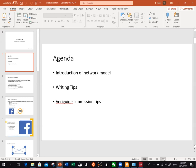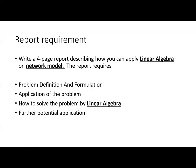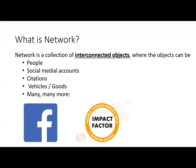So what is a network? A network is a collection of interconnected objects. For example, I've drawn four objects here: A, B, C, D. An object could be anything — people, academic papers, social media accounts, vehicles, anything. But just the objects themselves do not form a network, because now they are all independent and disconnected.